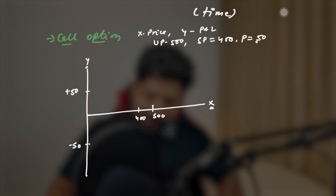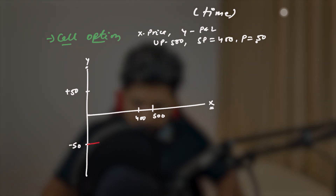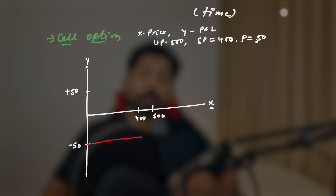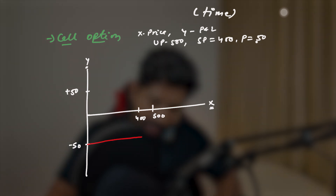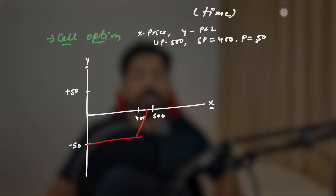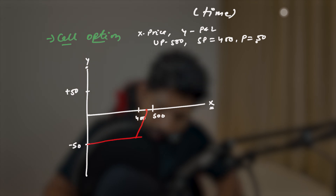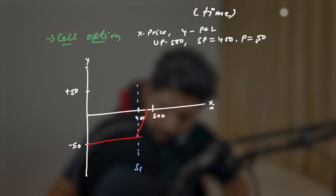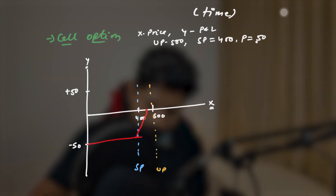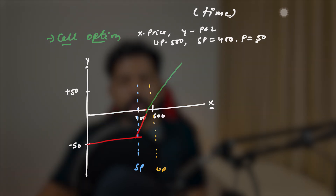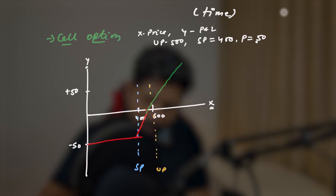Until the underlying price is below the strike price of 400, you are in a loss of 50 dollars due to the premium cost. As soon as it reaches 400 and moves above — say to 450 — you are at zero loss, zero profit: this is the break-even point. The strike price is 400 and the underlying price is 500. As the underlying price increases beyond the break-even, you get profit — here on every one dollar increase you get one dollar profit, so at 500 you are at plus 50, and then it's unlimited profit.